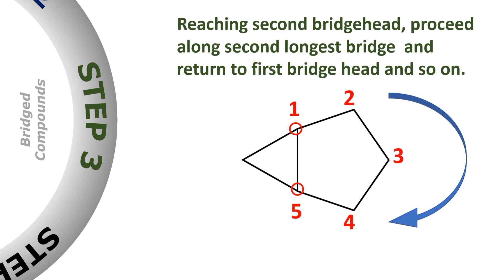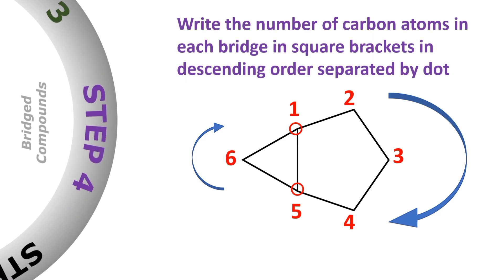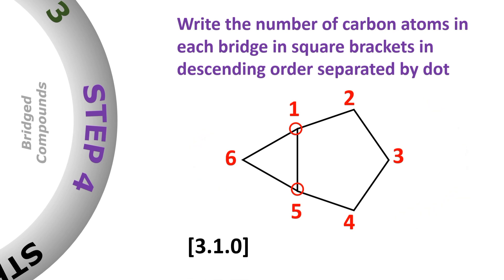After reaching the second bridge head, we will go along the second longest bridge, moving back to the first bridge head. After the numbering of the bicyclic system, the next step is to write the number of carbon atoms in the bridges in a square bracket in descending order. The right bridge has three carbon atoms so we write three, the left bridge has one carbon atom so we write one, and the third bridge has no carbon atom so we write zero.